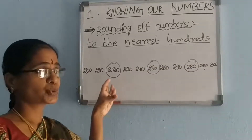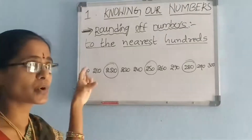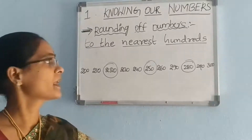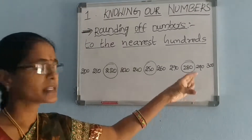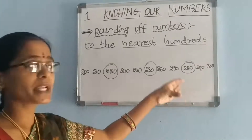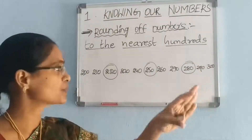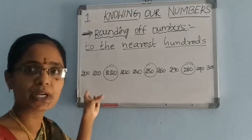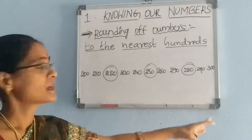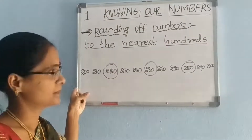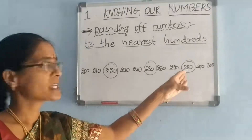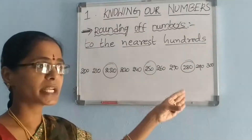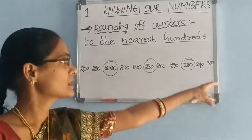220 is nearest to 200 than 300, so 220 will be rounded up to 200. Next, 280 is nearest to 300 than 200, so 280 will be rounded up to 300.